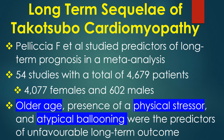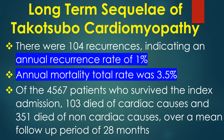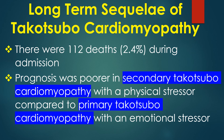Pellicia and associates studied predictors of long-term prognosis in a meta-analysis including 54 studies with a total of 4,679 patients. They found that older age, presence of a physical stressor, and atypical ballooning were predictors of unfavourable long-term outcome. There were 104 recurrences, indicating an annual recurrence rate of 1%, and an annual mortality rate of 3.5%. Of 4,567 patients who survived the index admission, 103 died of cardiac causes and 351 died of non-cardiac causes over a mean follow-up of 28 months. There were 112 deaths (2.4%) during admission, and prognosis was poorer in secondary Takotsubo Cardiomyopathy with a physical stressor compared to primary with an emotional stressor.